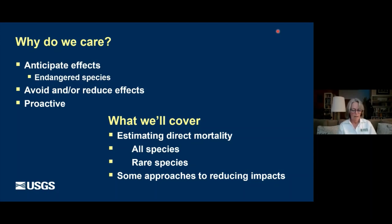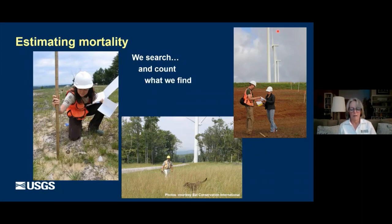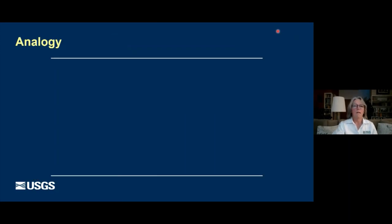So when we're estimating mortality, how do we go about doing that? Well, we send out people and sometimes dog-handler teams to search for dead animals. And we count what we find. But of course, what we find is not everything that's killed out there. Before I explain how we actually estimate what's out there, I'm going to put forth an analogy.